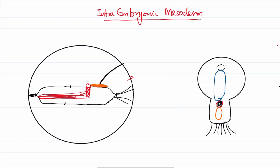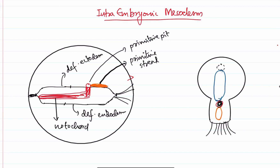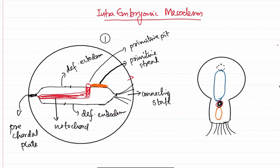So this was our view. In the first figure, this structure over here — we know that it is the primitive streak. And then we have a primitive pit. Above, we have the definitive ectoderm. Below, we have the definitive endoderm. The red structure over here is the definitive notochord. This is our connecting stalk, which is present at the tail end. And at the head end, we have the pre-caudal plate. This is marked to give us an orientation after the previous class. This is our first view, the horizontal view, and this is the view from above. We had discussed how we got this view in our previous section.